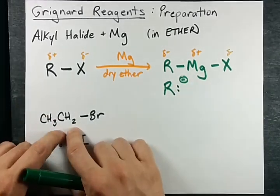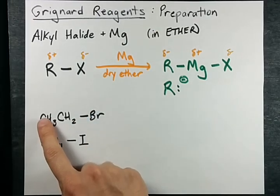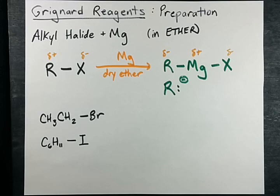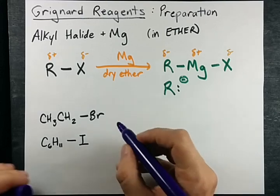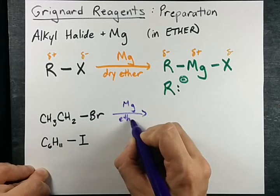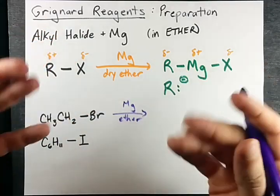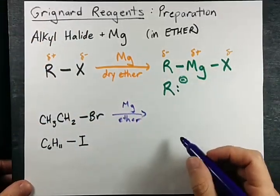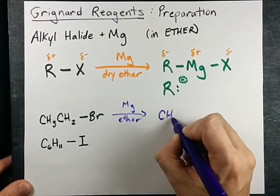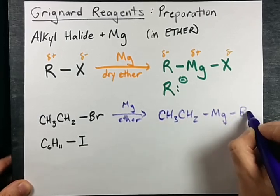Let's practice preparing Grignard reagents from alkyl halides. Here we have CH3CH2 with a bromine atom on it. I'm going to put that into ether and then drop some solid magnesium into the beaker or whatever you're doing this reaction in.